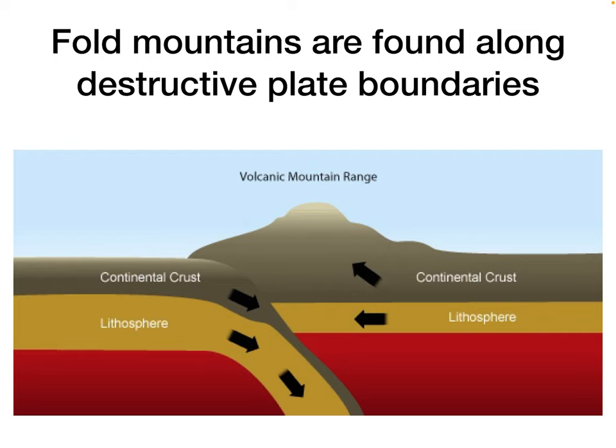A fold mountain is a mountain that's actually formed because of two plates colliding. The point where two plates collide is called a destructive plate boundary. Convection currents of magma are moving in currents underneath the two plates, causing the two plates to collide and push against each other. You can imagine two continental plates pressing and pushing against each other over millions of years, the pressure of the two rocks and the two plates squeezing and pressing against each other.